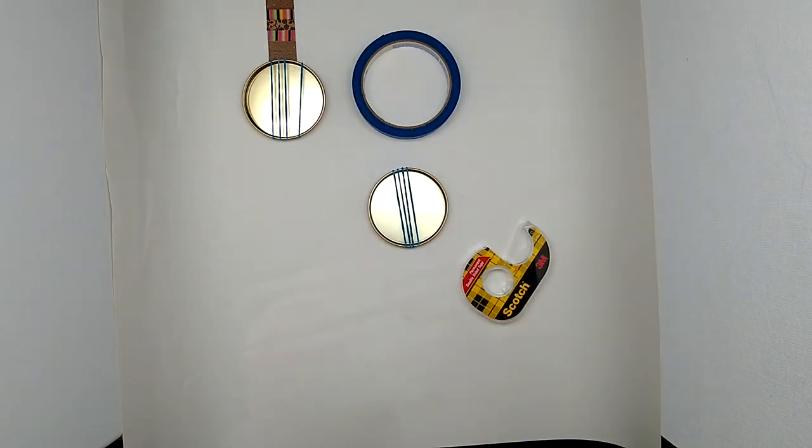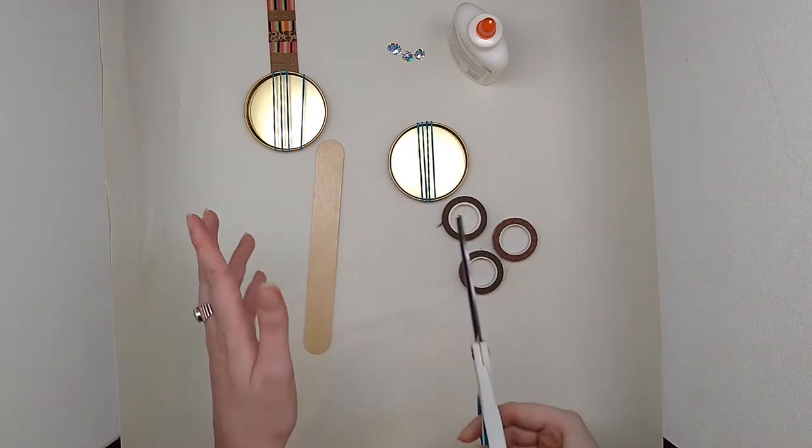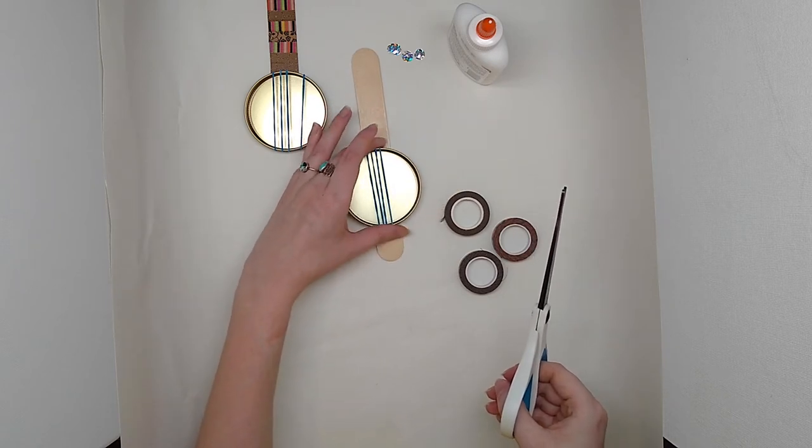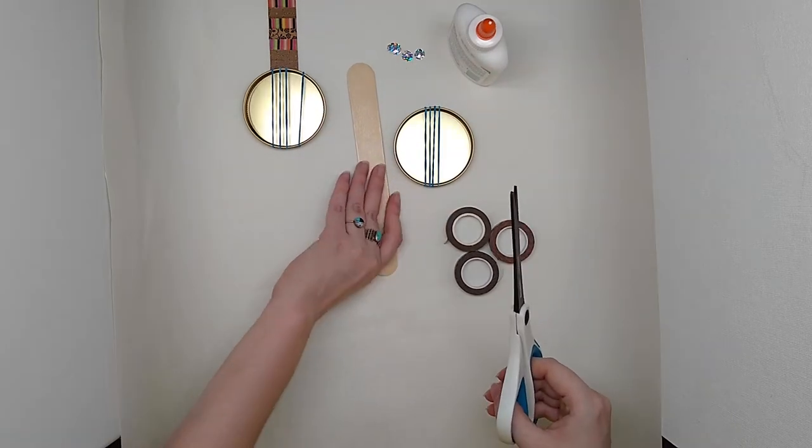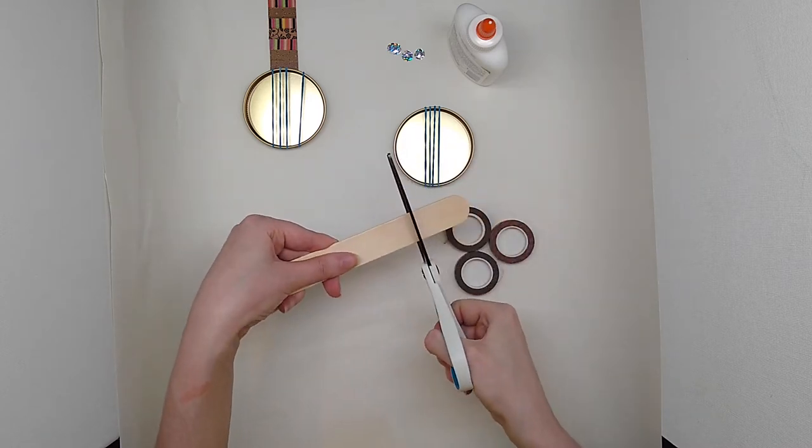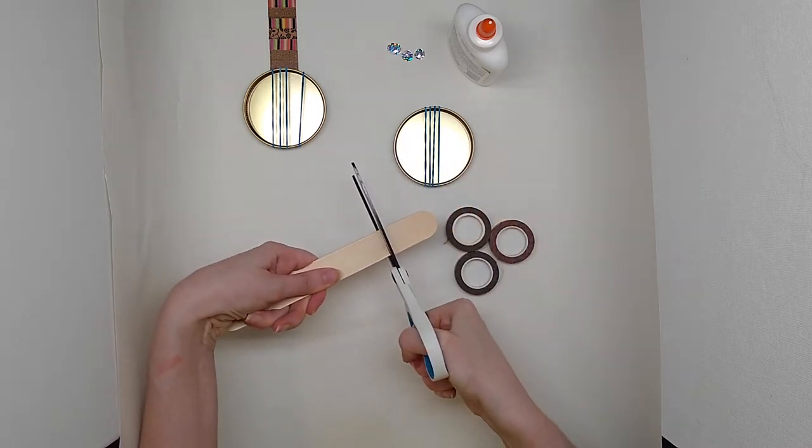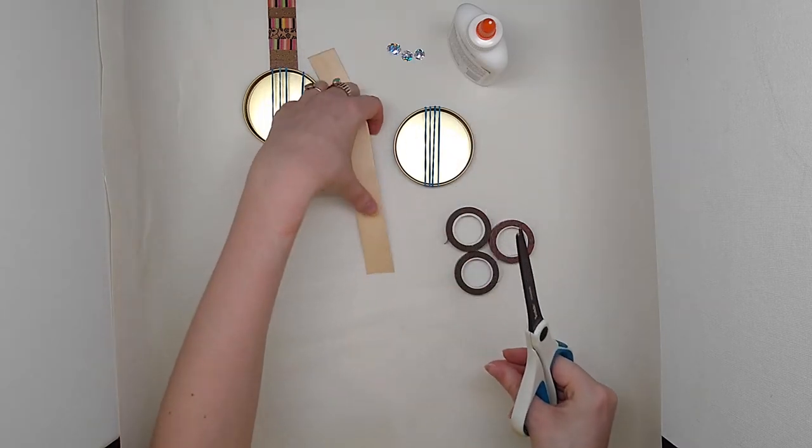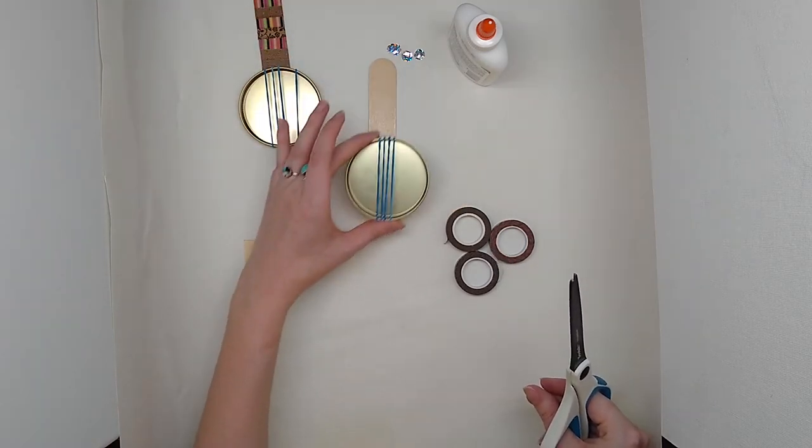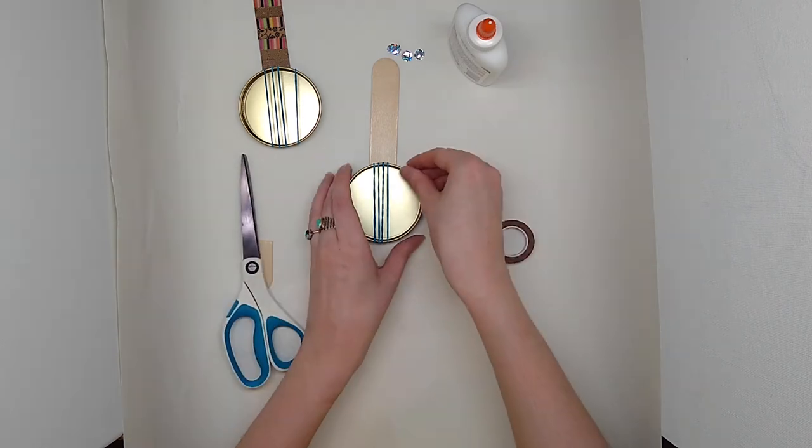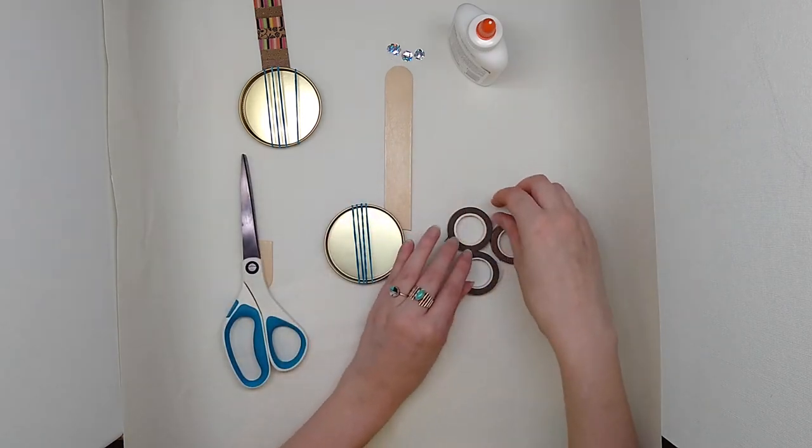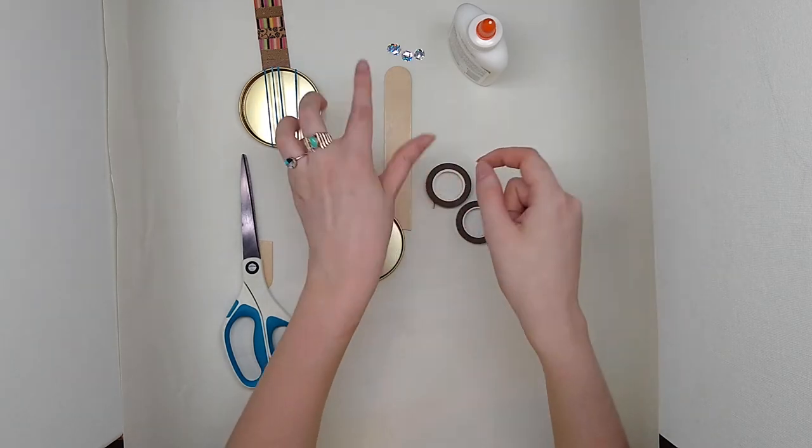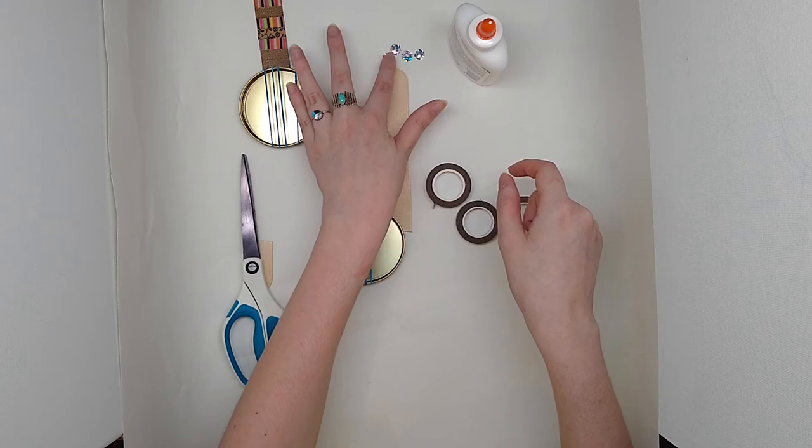Now we can start decorating. It's time to decorate and construct our banjo. My popsicle stick is a little long so I'm gonna give it a bit of a trim. With craft sticks they are really easy to cut, just be careful it doesn't break in two. That's a better length. So what I'm going to do here is make some fret boards with some washi tape and then add my little tuning knobs up at the top with some sequins and some glue.